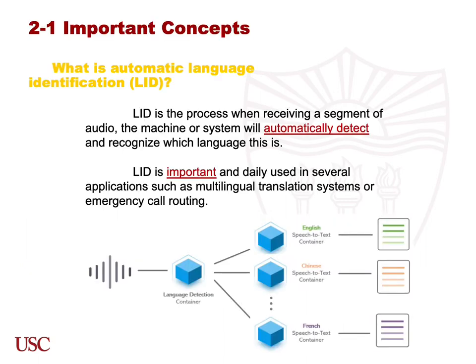Here I want to explain two important concepts. The first one is Automatic Language Identification, short for LID. LID is when machines or systems receive a segment of audio from speakers, they detect and recognize which language it is, and collect or analyze it. LID is used very often in our daily life by various applications.